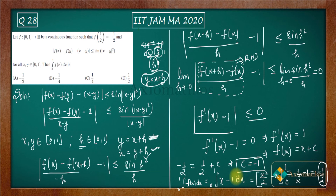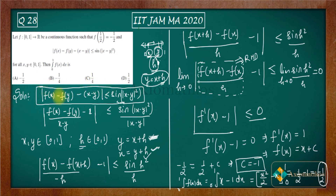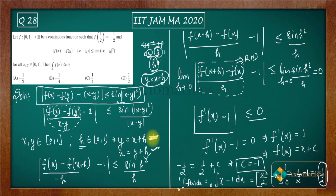So the answer is -1/2. Let me explain everything again. You have this equation and what you have to do is turn this equation into the derivative. If you understand the definition of the derivative, you can understand this question. What I did was take (x - y) as a common factor to get that form. In order to make this quantity the derivative, you need x to be very close to y — that is f'(x). Substituting y = x + h gives us the right expression.